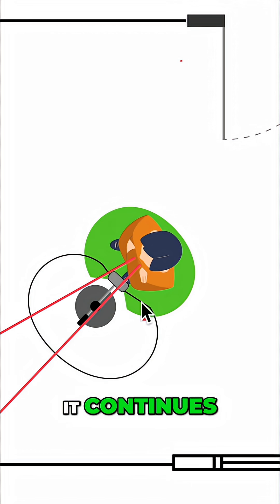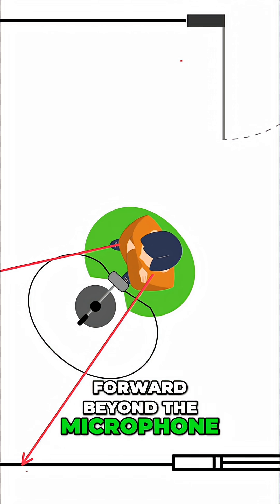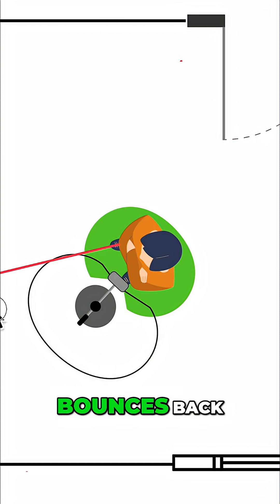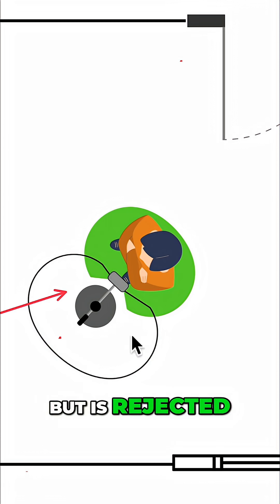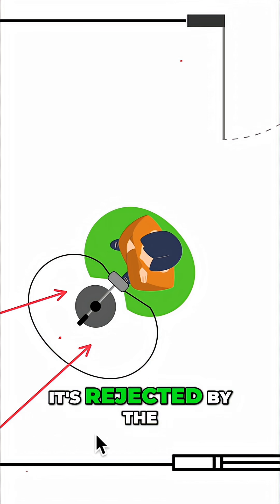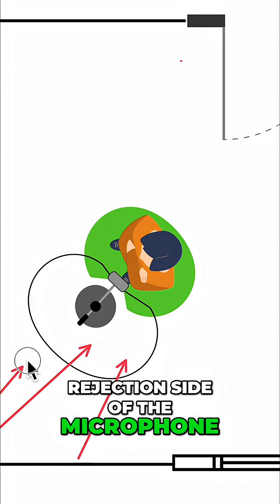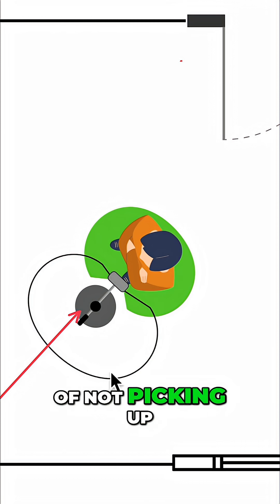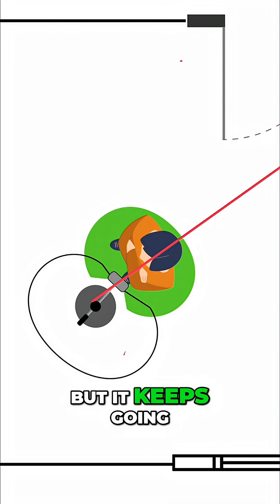It continues forward beyond the microphone and hits the wall in front of him, bounces back, but is rejected. It's rejected by the rejection side of the microphone. So the microphone does a pretty good job of not picking up this reflected sound, but it keeps going.